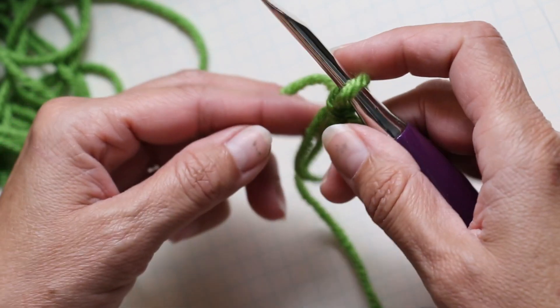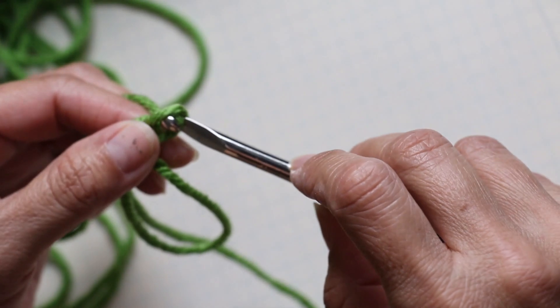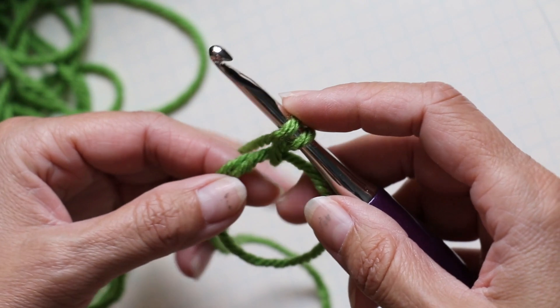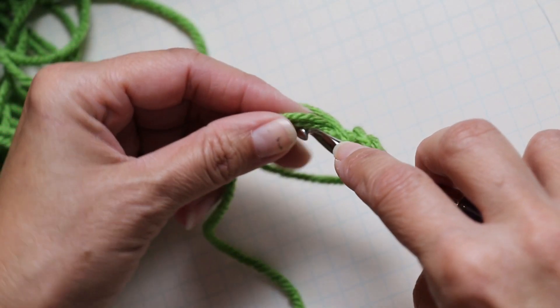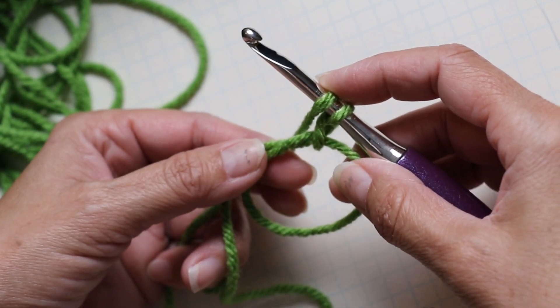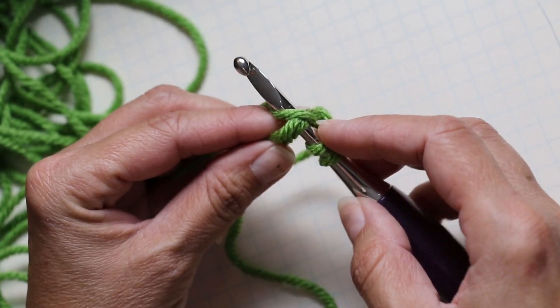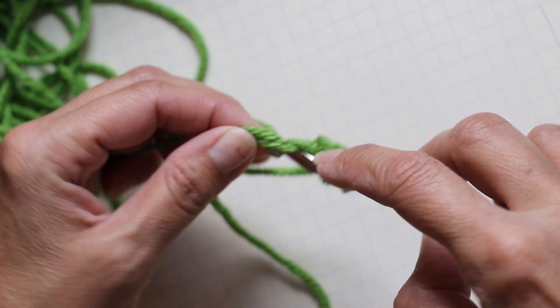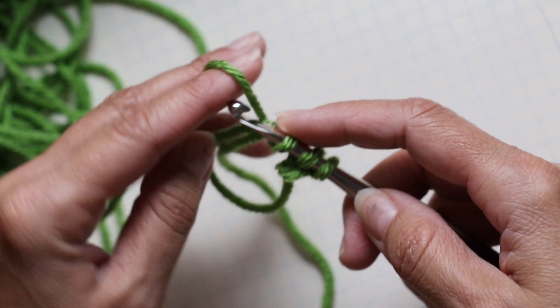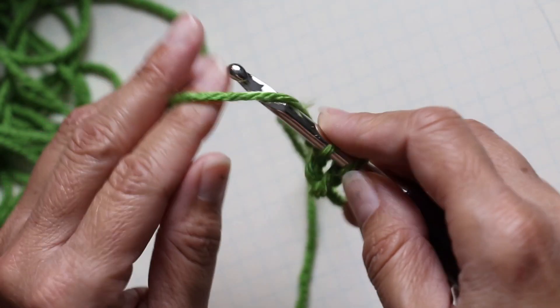Yarn over, take your hook, twist it into the circle outside, grab your yarn, and now you're coming through the circle. Your working yarn will go on the outside of the circle. Pull through two with this double crochet, pull through two.